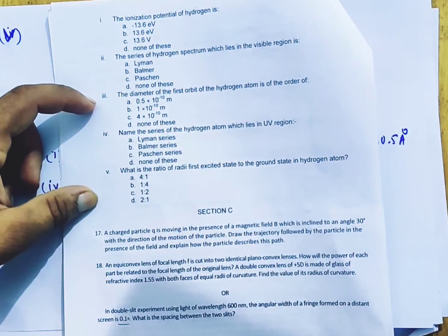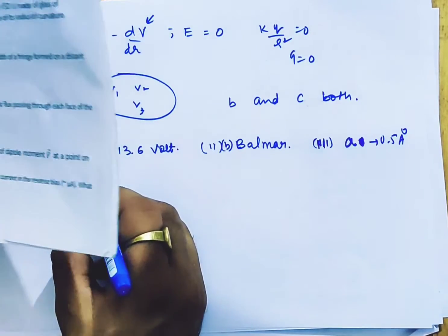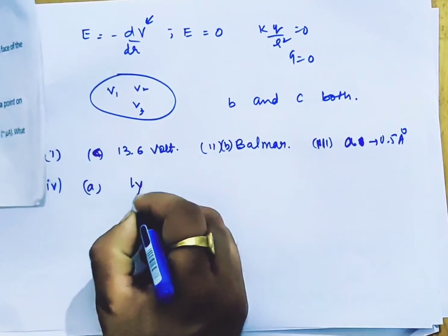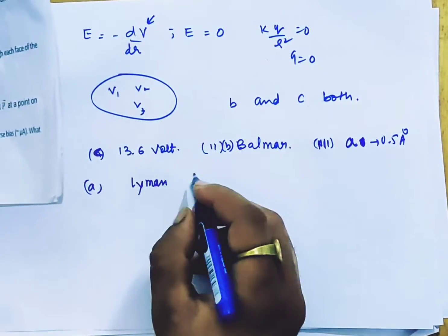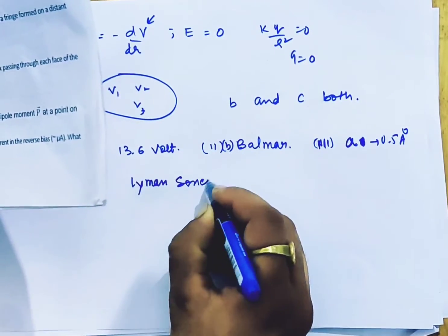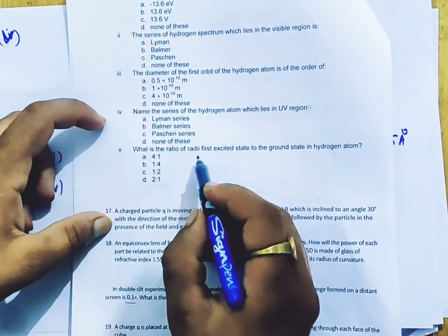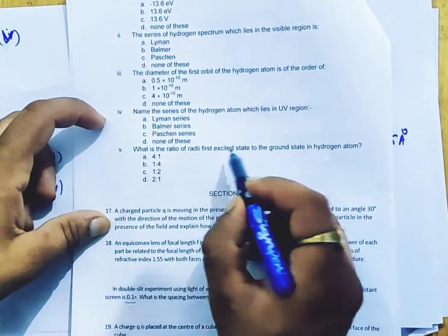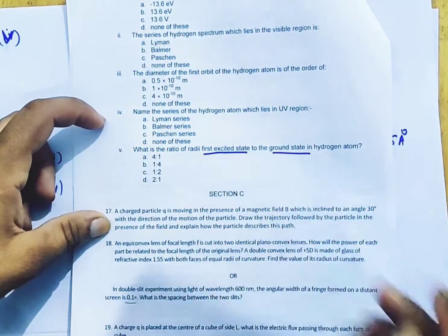Name the series of hydrogen atom which lies in the ultraviolet region, that is Lyman. Which we technical simple last minute, what is the ratio of the radii of first excited state to the ground state now?